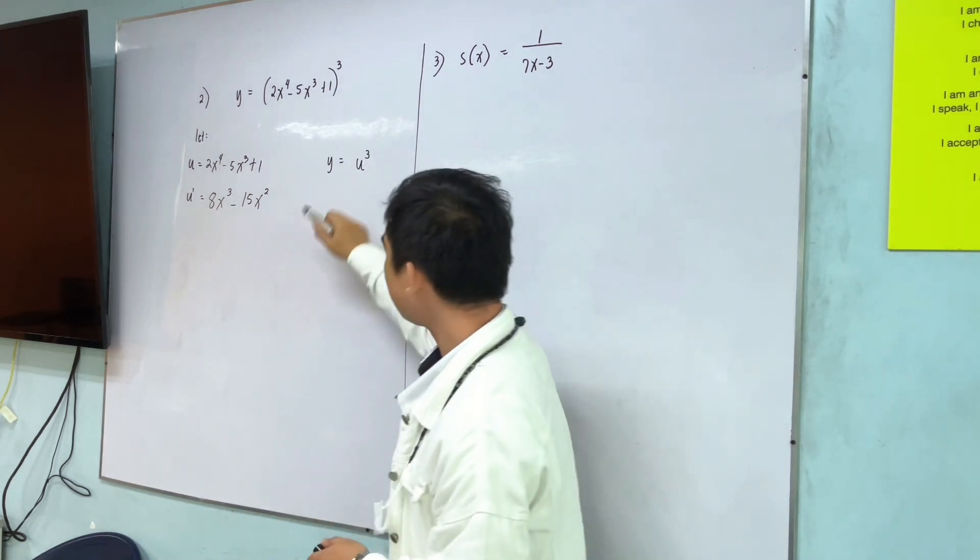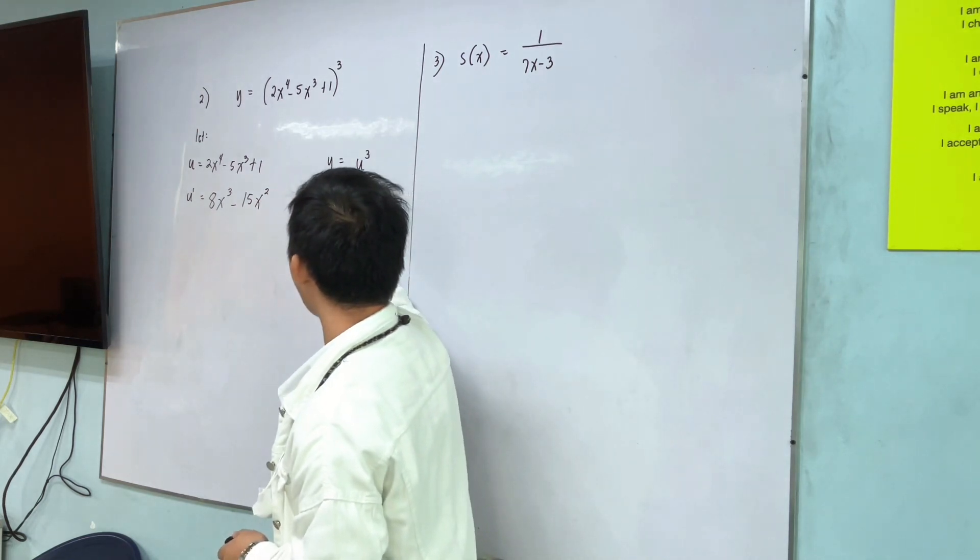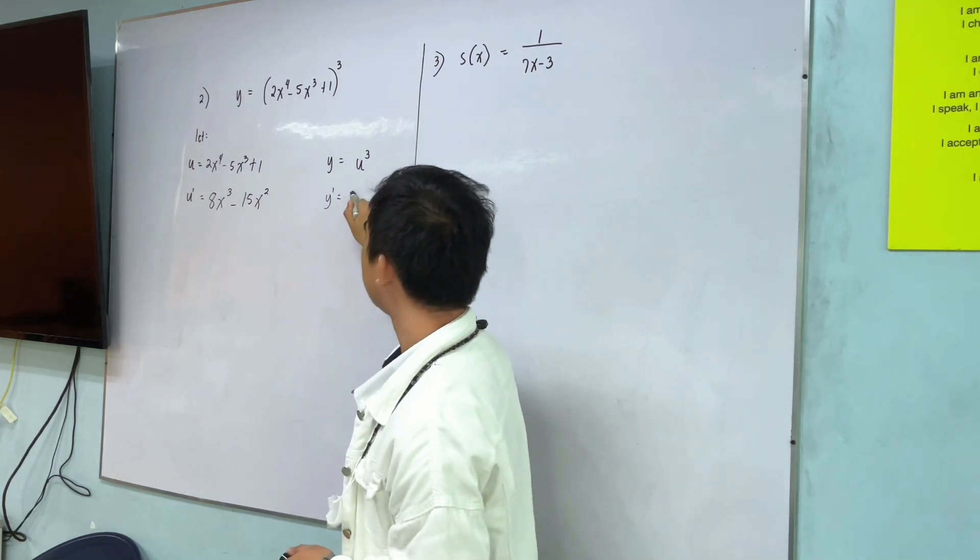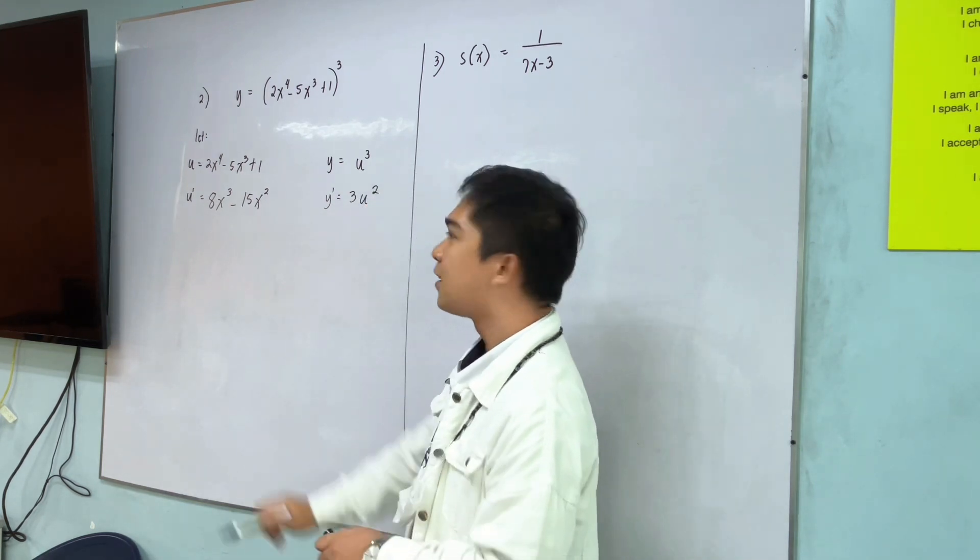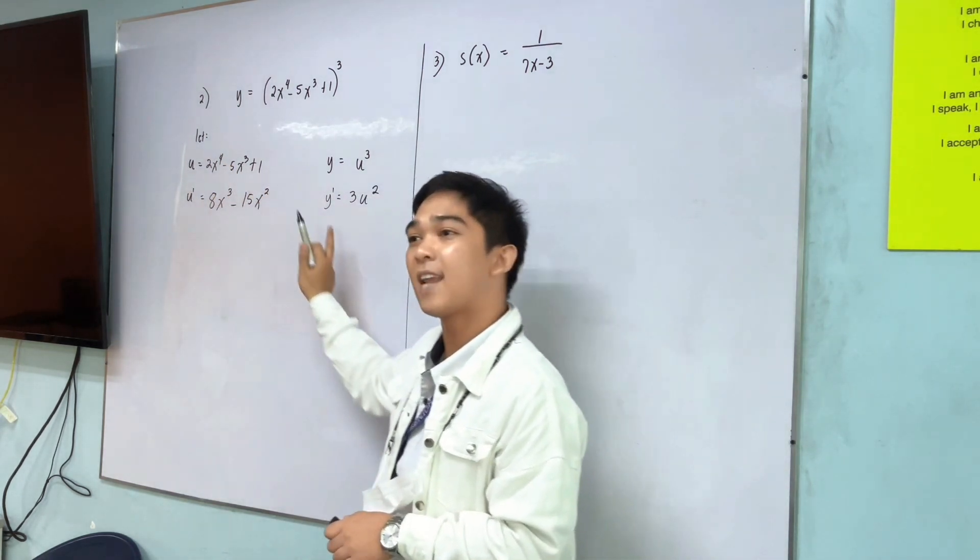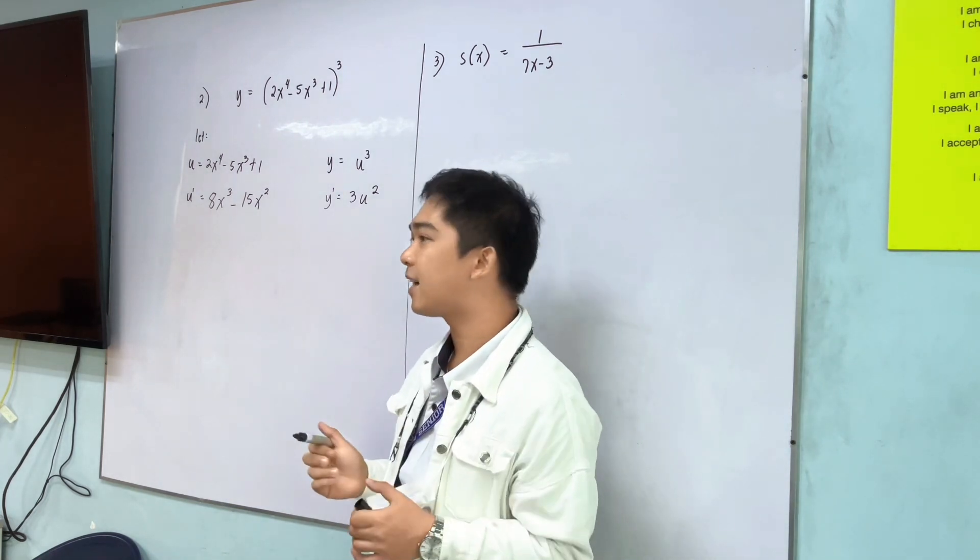Now, get the derivative. y prime is 3u squared. So, ito na yung dalawang kailangan natin. I-multiply na lang natin sila.